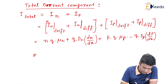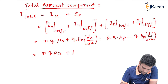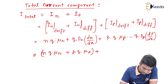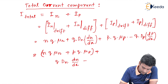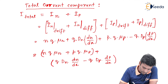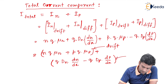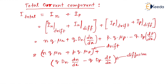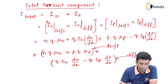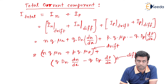So we can write this equation as: n·q·μ_n + p·q·μ_p + q·D_n·(dn/dx) − q·D_p·(dp/dx). The first two terms are due to the drift motion and the next two terms are due to the diffusion motion. This is the total current component inside the semiconductor. Thank you.